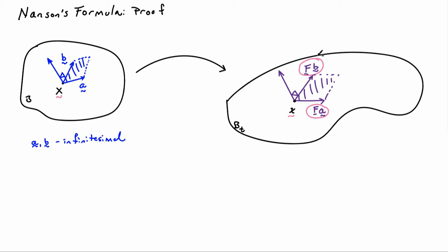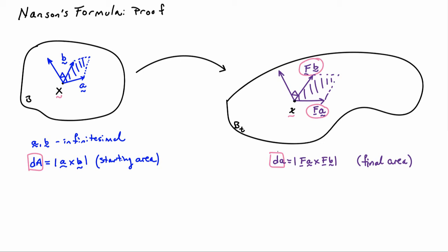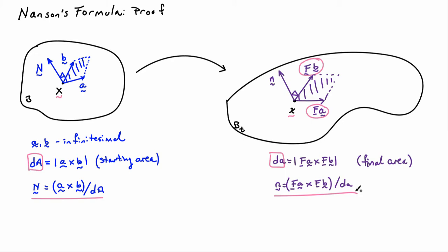The starting area is the norm of the cross product of A and B. The final area after deformation is the norm of the cross product of FA with FB. The starting area will use the symbol D capital A, and the final area will use the symbol D little a. The normal to the area element in the undeformed configuration will use the symbol capital N, which is just the cross product divided by its norm. In the deformed configuration, the unit normal to the area will be the cross product of FA with FB divided by its norm, which is D little a. Nanson's formula says that J F-inverse-transpose times capital N times D capital A is equal to little n times D little a.